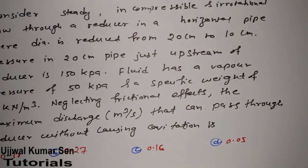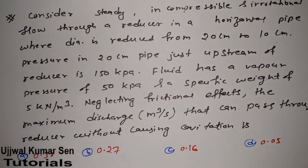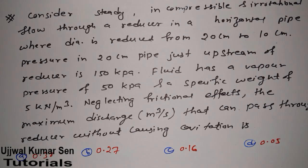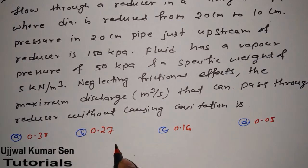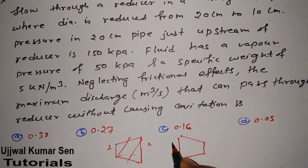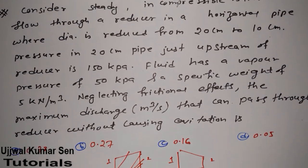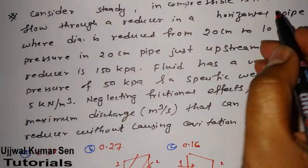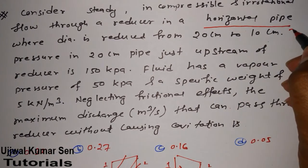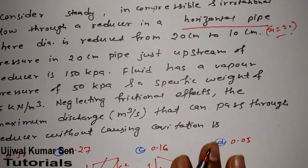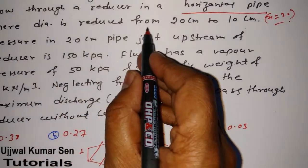Let's go through the question. It asks: consider steady incompressible flow through a reducer in a horizontal pipe. The diameter is reduced from 20 cm to 10 cm. Remember, horizontal pipe means z₁ = z₂ when implementing Bernoulli's equation.